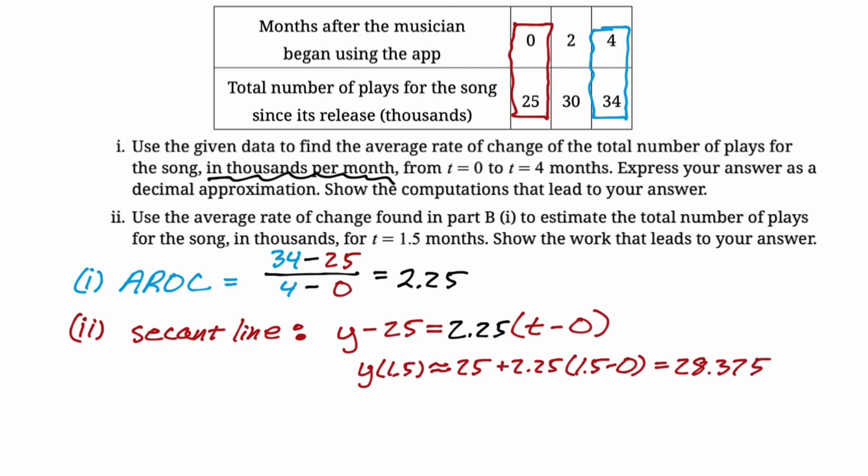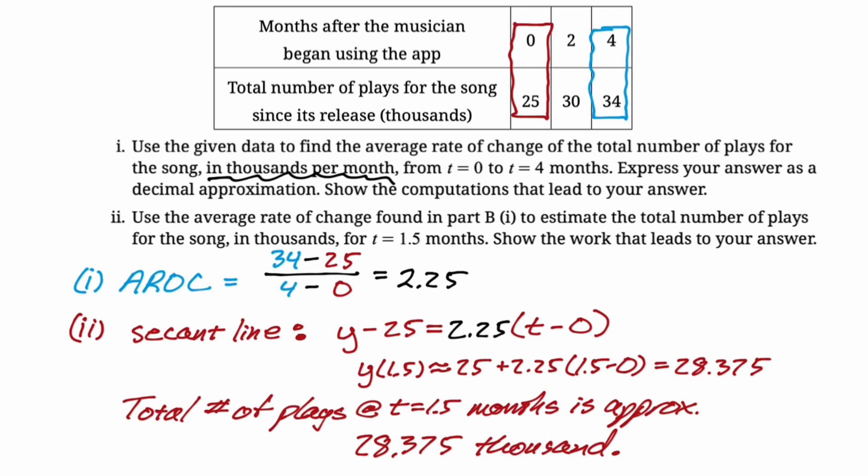Now, because I got a little anxious about all the variables going on here, I just wrote a sentence at the end. The total number of plays at T equals 1.5 months is approximately 28.375 thousand so that nobody needs to look at my variables and be like, but what is this? I wrote a sentence at the end, just clarify everything.